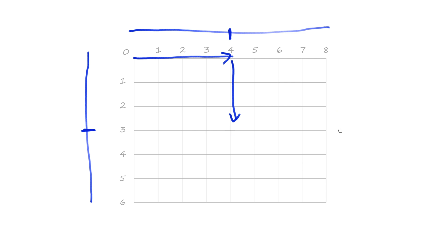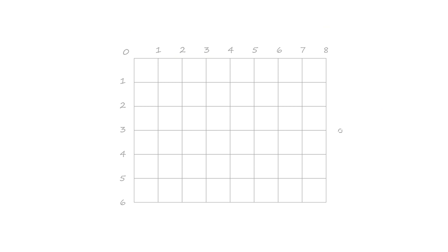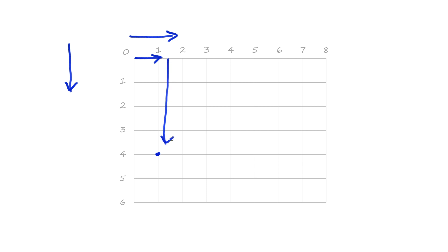Let's look at another example and practice. Let's pick a random position. The way we think about it is to say: how far along is it in the horizontal direction? It's one along. How far down is it in the vertical direction? One, two, three, four - four down. So its coordinates are one comma four.